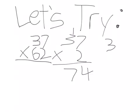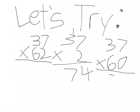We don't need to bother with that 0 right now. So 7 times 6 is 42. Carry the 4. 3 times 6 is 18. Plus 4 is 22.